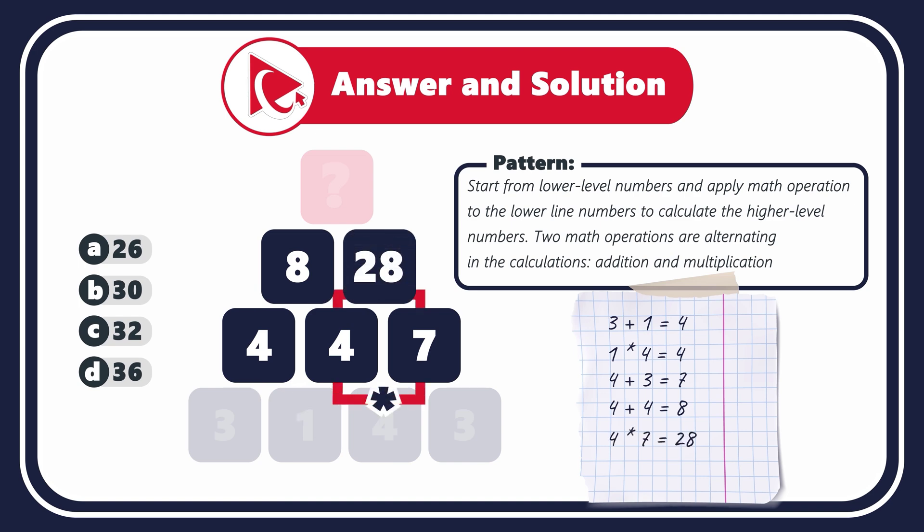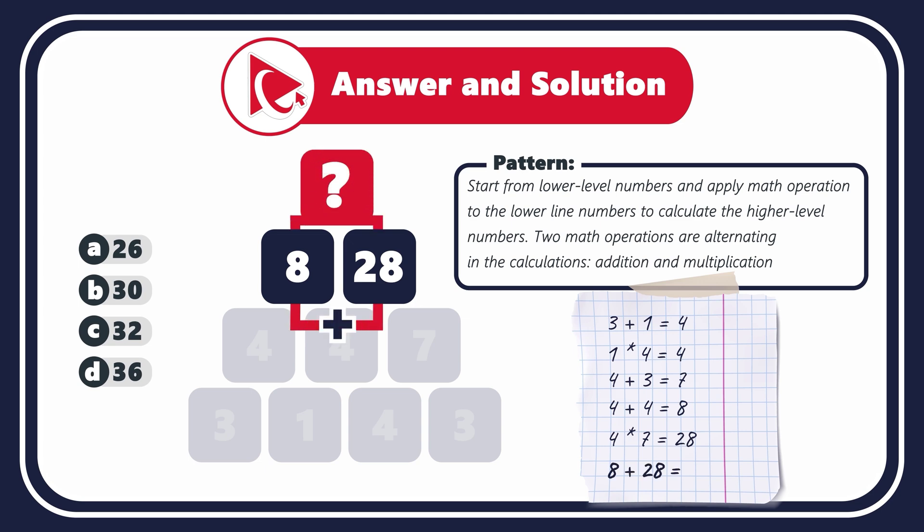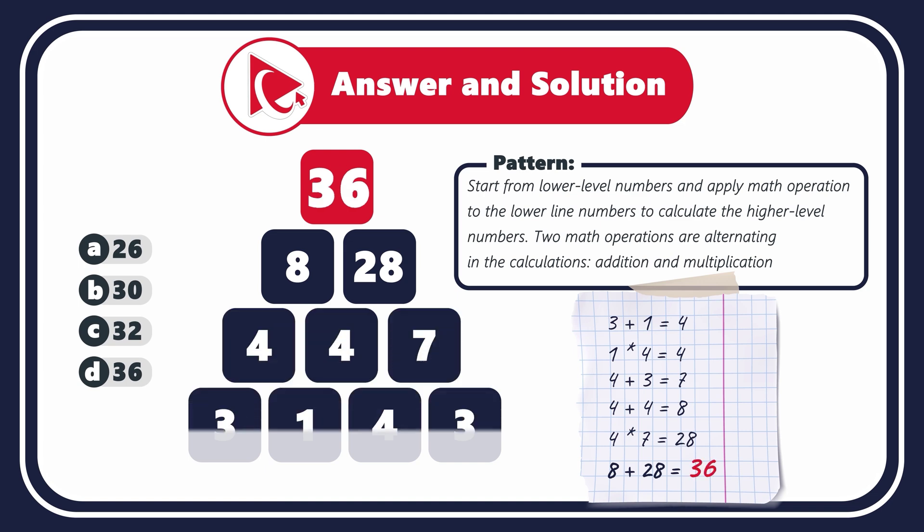But 4 multiplied by 7 equals 28. So to calculate the top number, we need to add 8 and 28 to get to the final result of 36. So the correct answer here is choice D, 36.